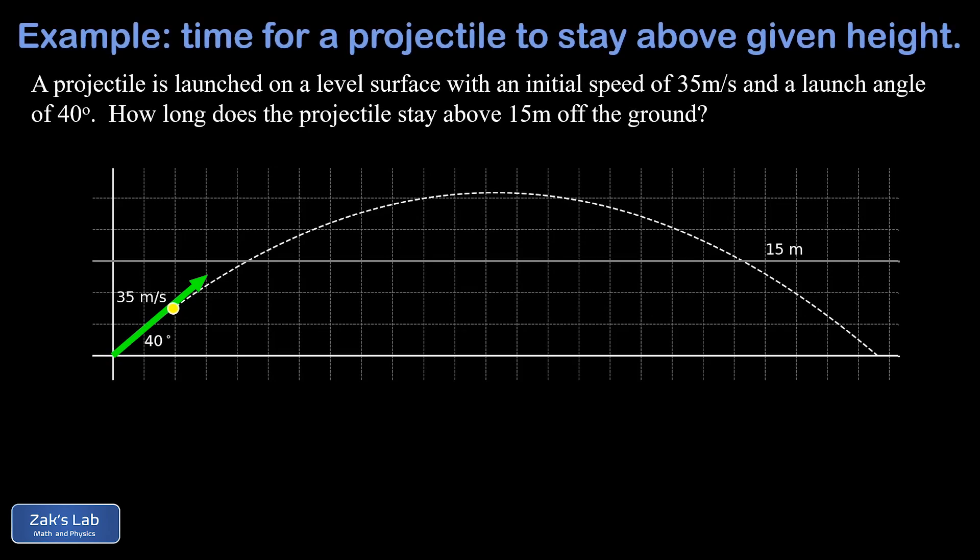In this video, we're solving a projectile motion problem where the question that we're asked is a little bit unusual. So we're given the initial conditions on our projectile. It's launched at 35 meters per second at an angle of 40 degrees on a level surface.